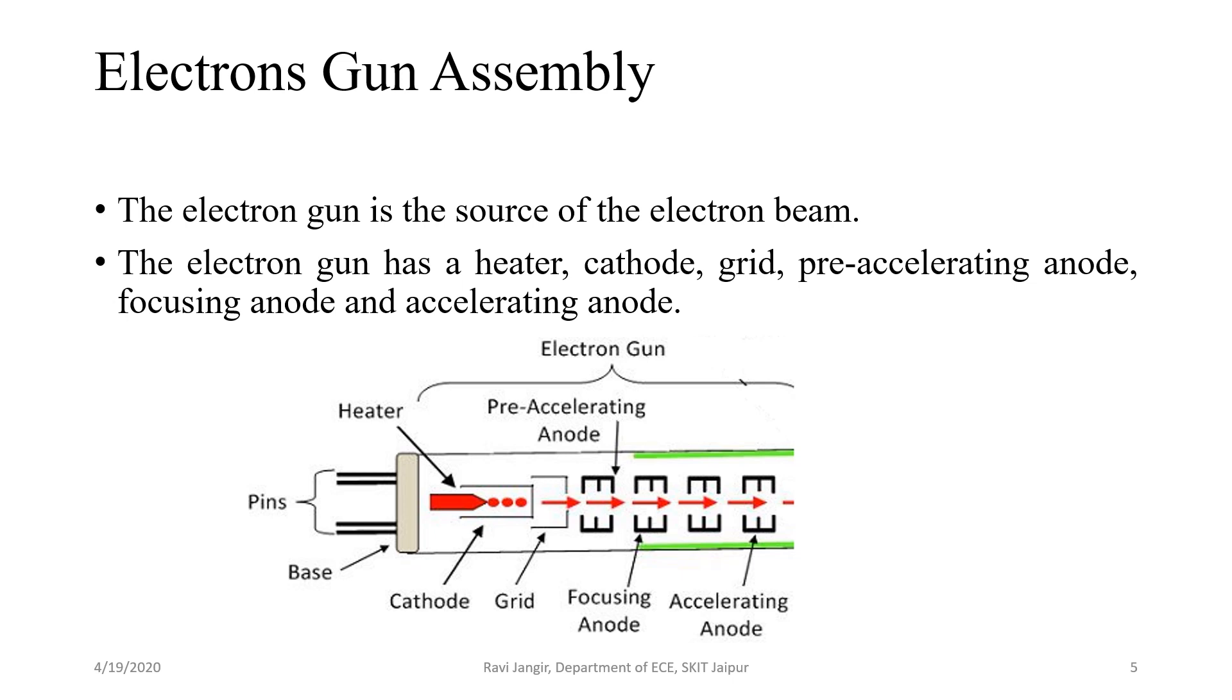The electrons are emitted from the highly emissive cathode. The cathode is cylindrical in shape and at the end of it, the layer of strontium and barium oxide is deposited which emit high emission of electrons at the end of the tube.